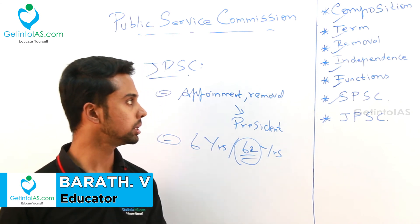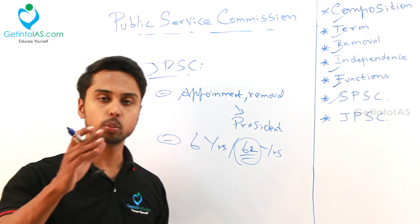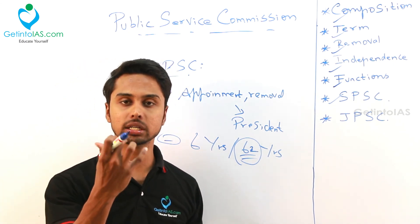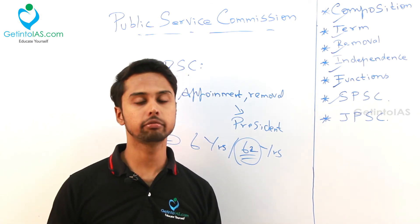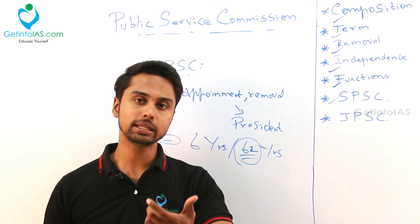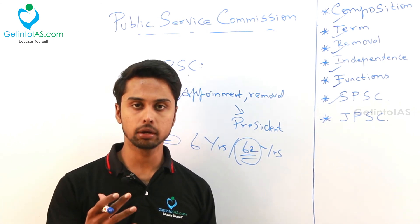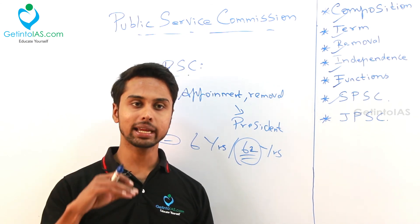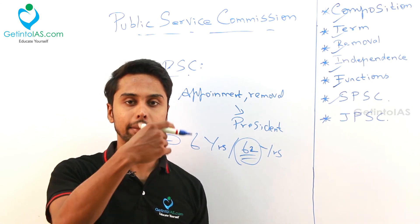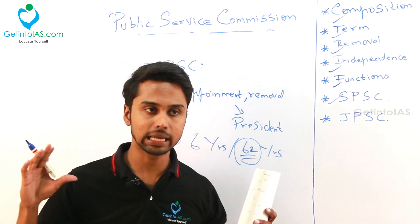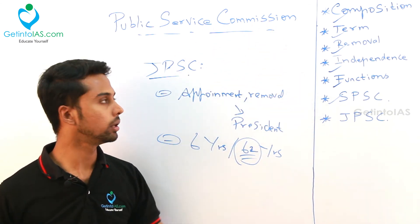With that we are coming to the end of the Public Service Commission. Have a clear understanding of these three. The jurisdiction of UPSC can be extended by an act of parliament, and the post under the ambit of UPSC can be varied by the president after approval of parliament — these can be asked as one-liners in exams. Who is appointing, who is removing, whether reappointment is allowed — that is very important. Thank you.